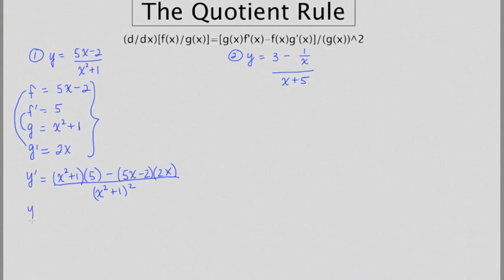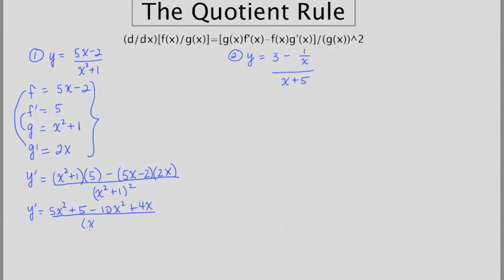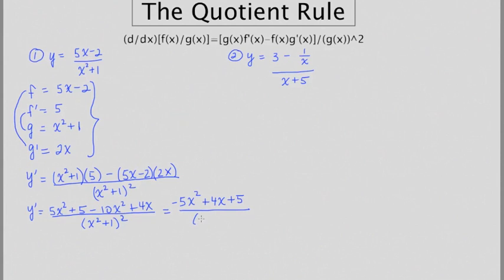So we're going to clean up a little bit here, and we end up getting 5x squared plus 5, then minus 10x squared plus 4x. All of this is going to be over x squared plus 1 squared. With a little bit more cleanup, we end up with negative 5x squared plus 4x plus 5, all over x squared plus 1 squared.